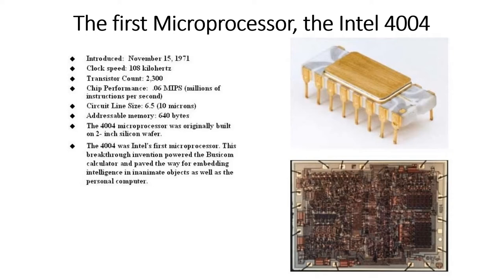It only ran 60,000 instructions per second, and you can see the line size of the circuit was 10 microns — today feature sizes are down in nanometers, or billionths of a meter. Chip feature size has come a long way. The chip could address 640 bytes of memory and was originally built on a two-inch wafer. This chip wasn't meant to be a standalone microprocessor but instead powered the Busicom calculator, paving the way for future microprocessors.